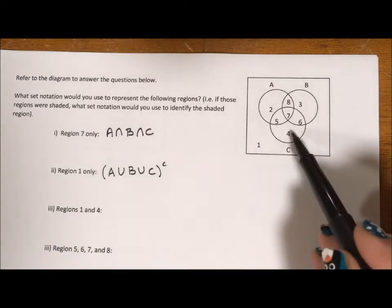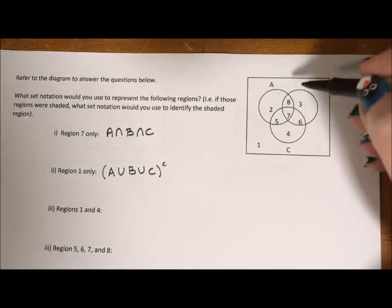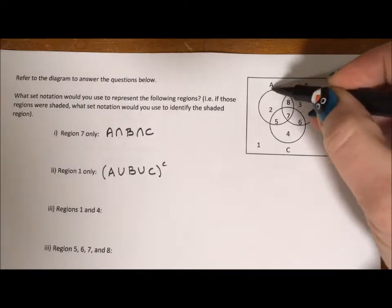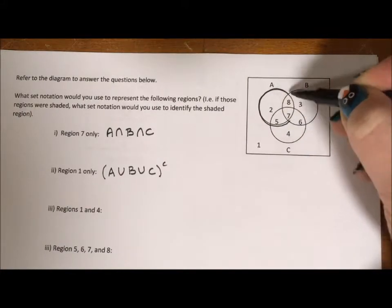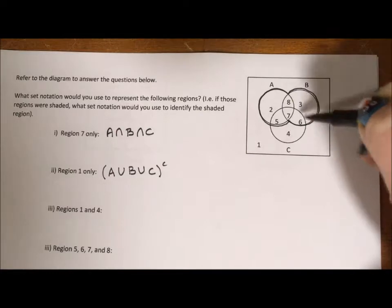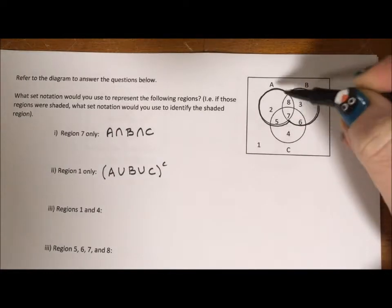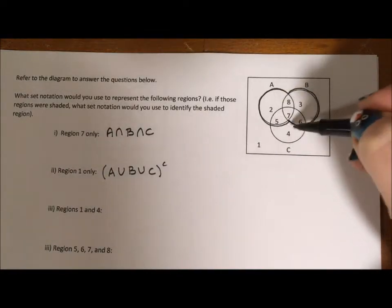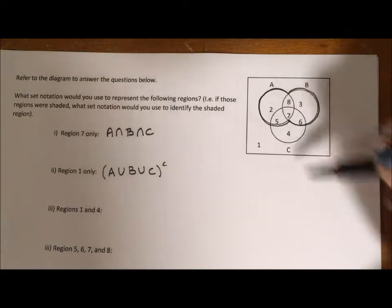For regions 1 and 4 if we just look at circles A and B as if they were all that were there, so we kind of have this spyglass versus three circles, we could see 1 and 4 is everything but all of these bits in A and B.